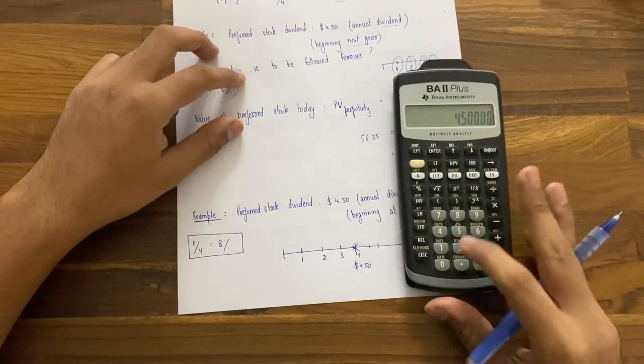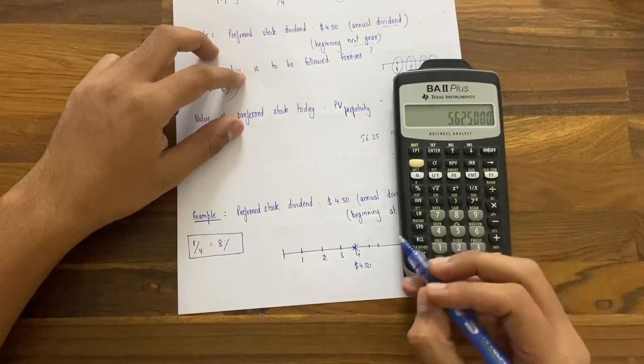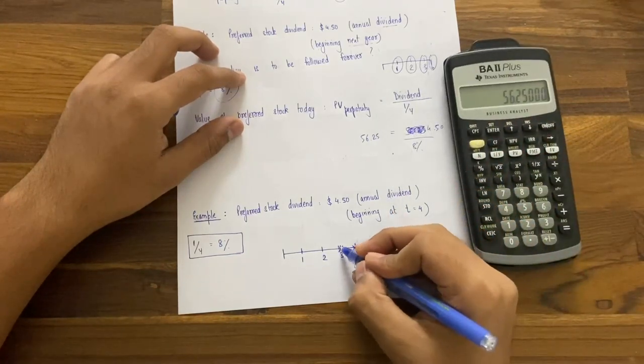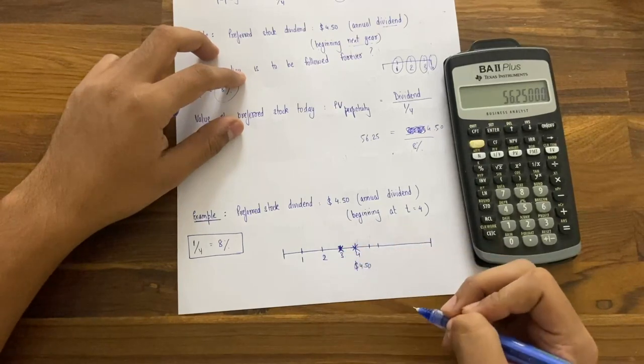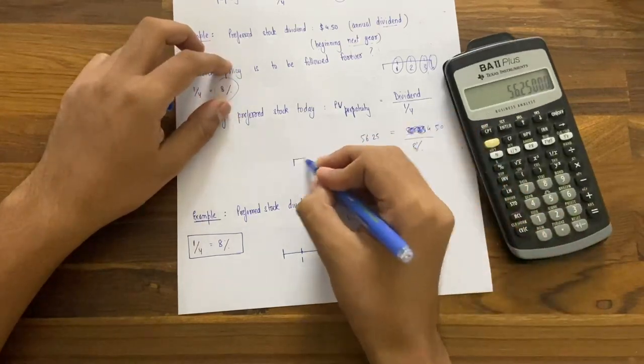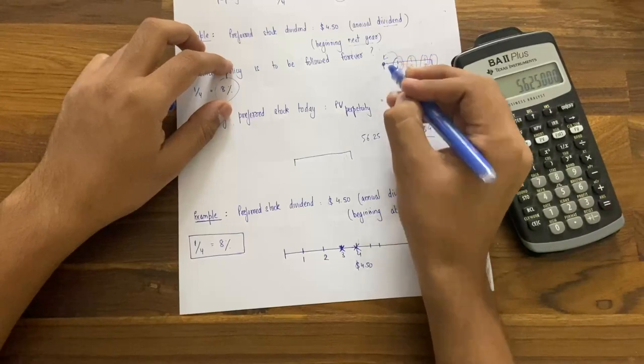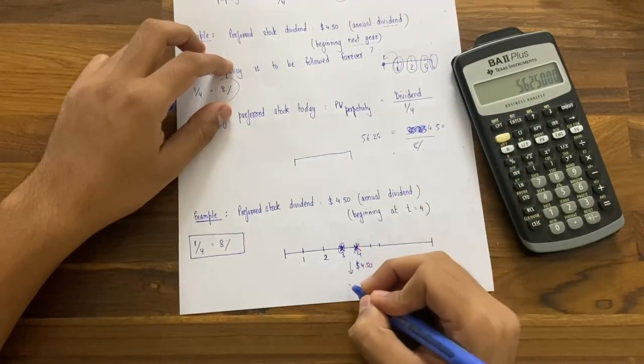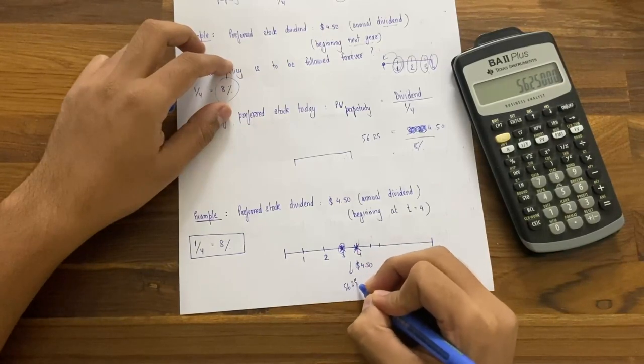If you do 4.5 divided by 0.08, you will get the value of 56.25. The value of 56.25 is at time period 3. As I told you, where we have the first cash flow, the present value is one period back. So at this point in time, 56.25 is our value.